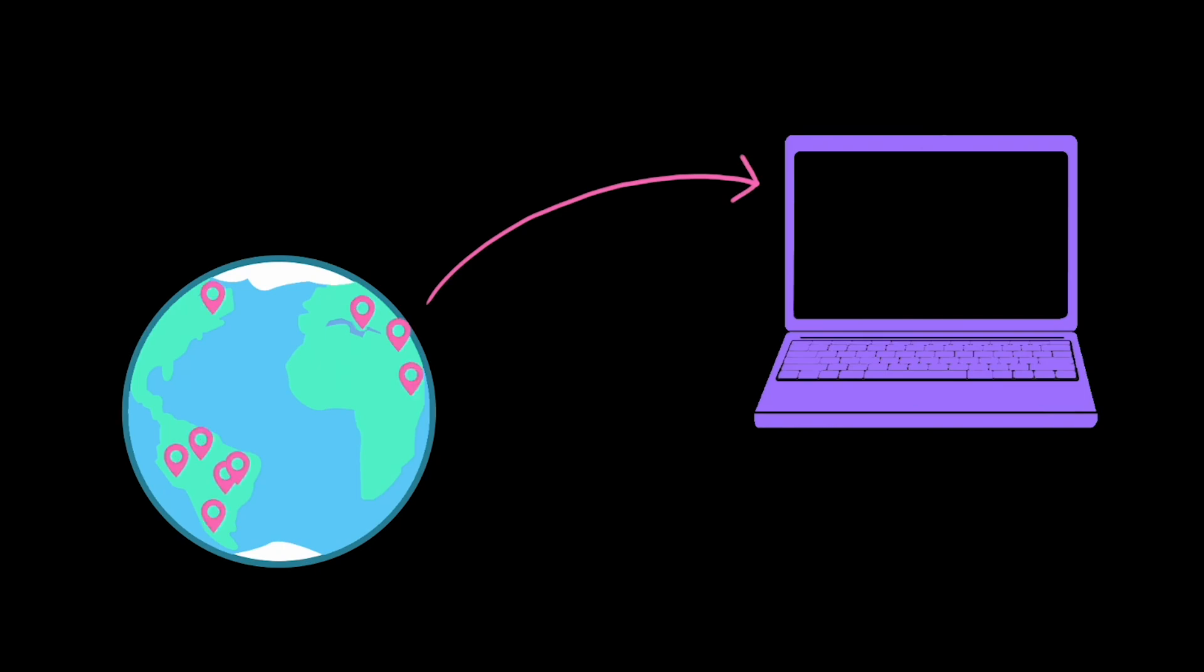We don't have data on the conditions at every single point on Earth. And even if we did, the computer wouldn't be able to handle all that data. We can, in theory, more accurately predict tomorrow's weather, but by the time we get the result, it'll be the day after tomorrow.